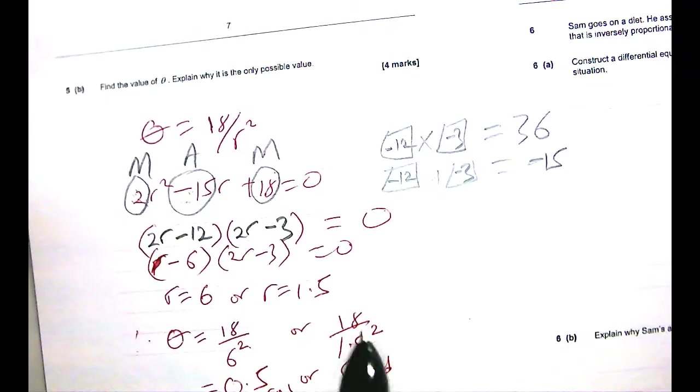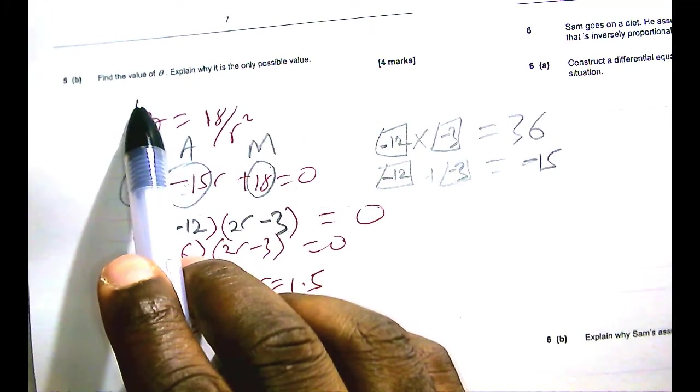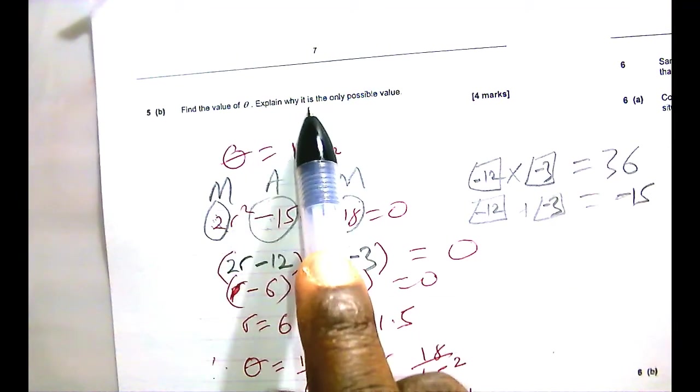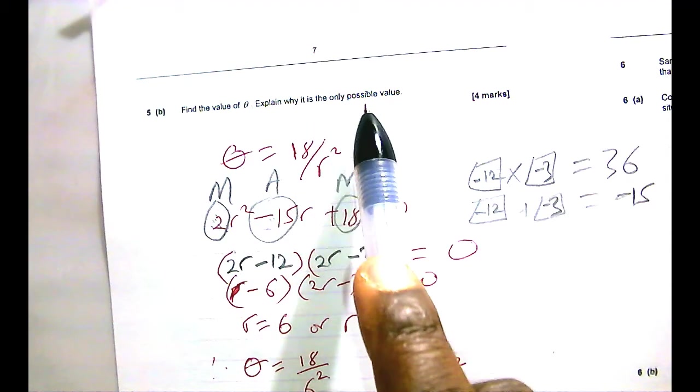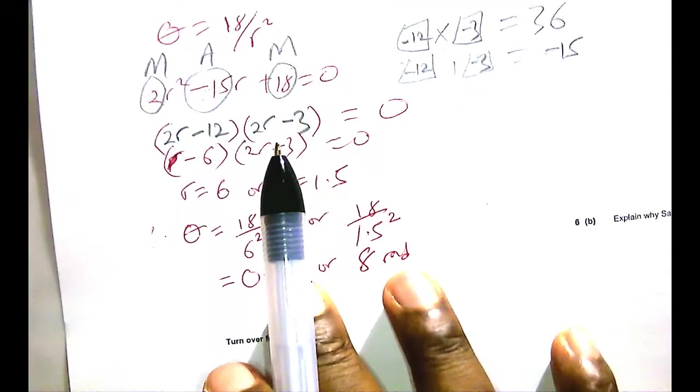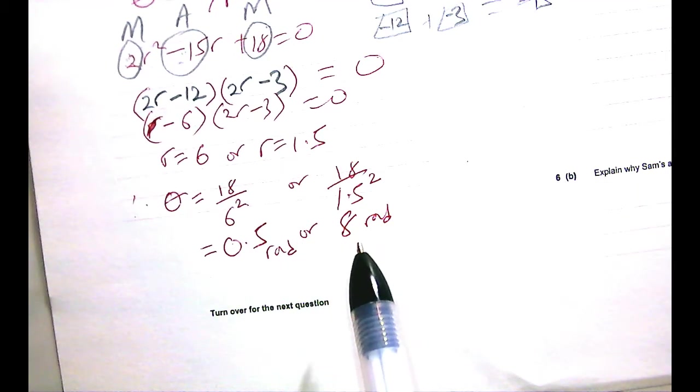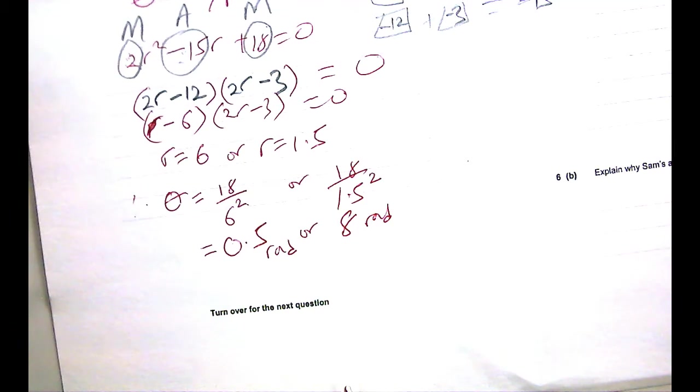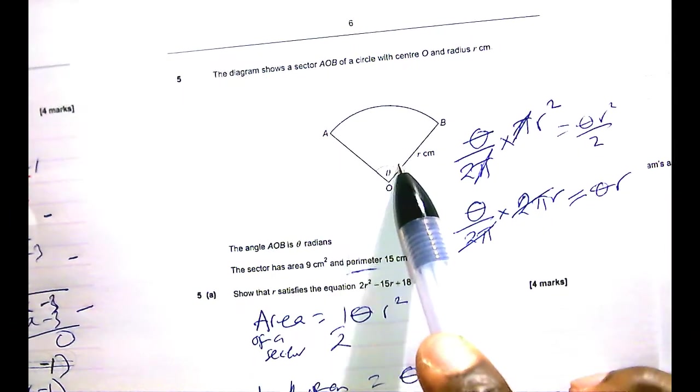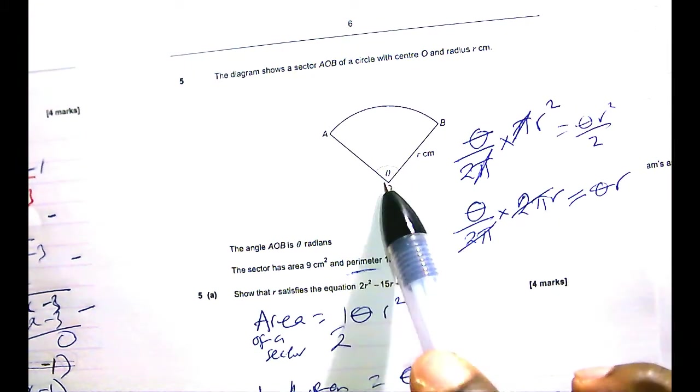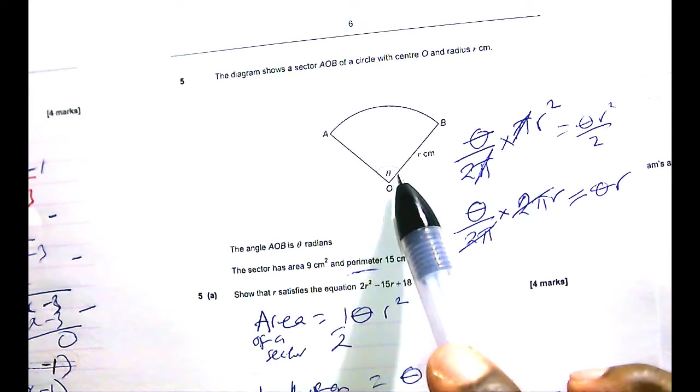Now, as you can see, the question says find the value. It did not say find the values. So we should have only one answer. Why do we have 2? And here it says explain why it is only possible to have 1 value. Well, if θ could be 0.5 or 8 rad, each of them does not make sense. As you can see, in the sector shown, θ is not even up to 2π. It's just a fraction of a circle. θ can never be greater than 2π.